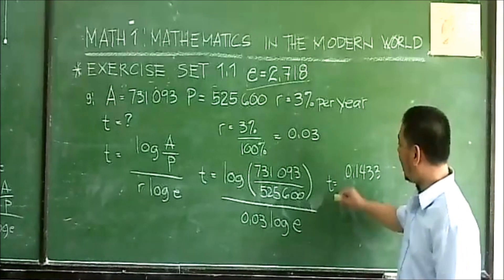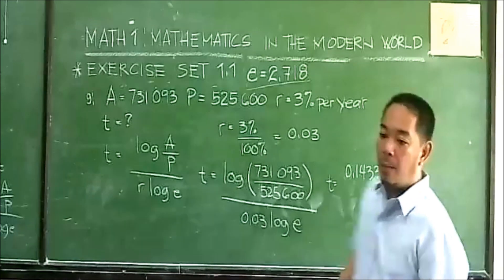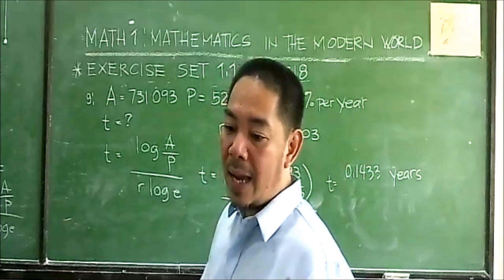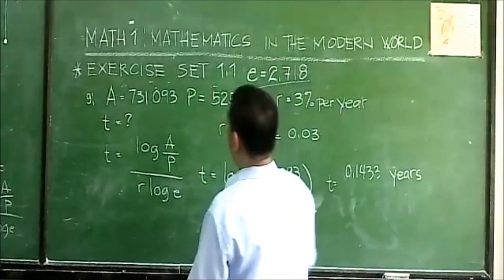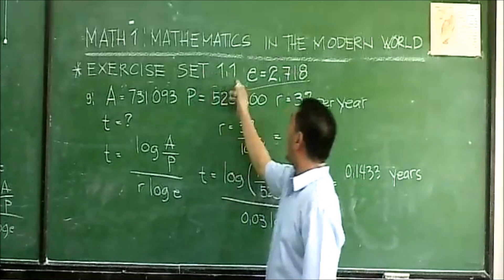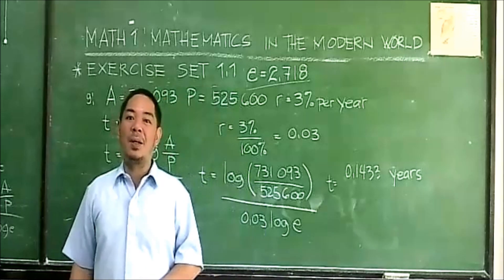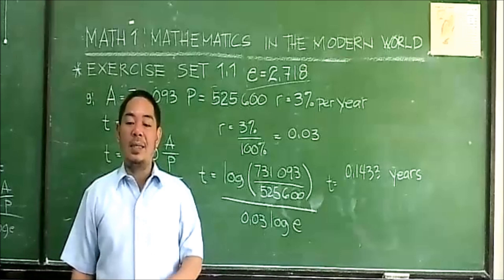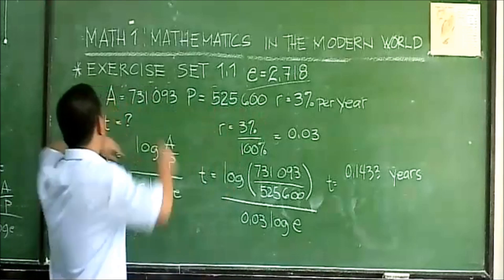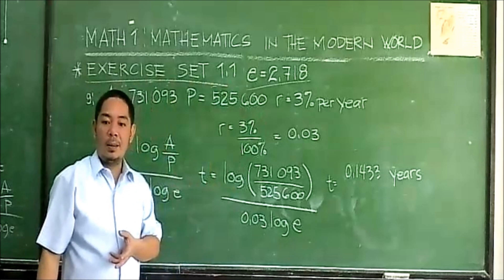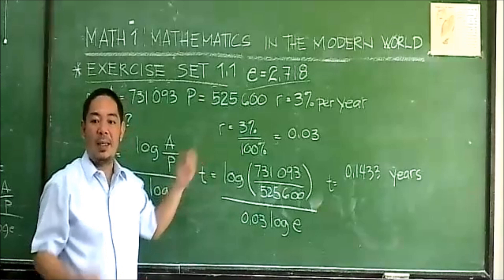So that T is in years. You can also multiply this by 360 days, 365 days, or 366 days. This concludes Exercise Set 1.1 on Patterns and Population Growth. Your assignment is the unsolved questions in Exercise Set 1.1. That's all for now, and I hope you understand the discussion. God bless.